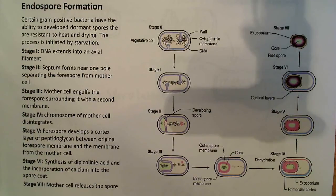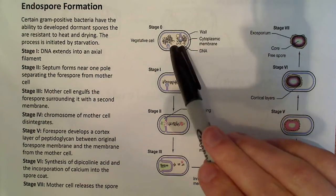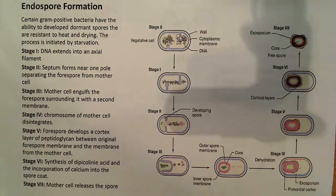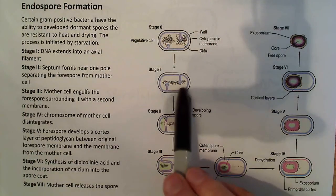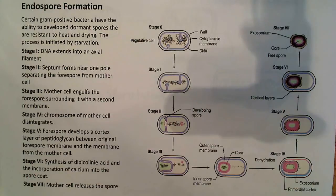So in stage one, the DNA extends into an axial filament. So what you'll see in this stage one is that the DNA is here in the nucleoid. It's very compact, and it's almost circular. But in that first stage, it's going to form this axial filament. So it's going to become more linear and elongated, essentially.